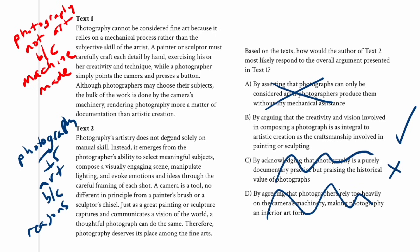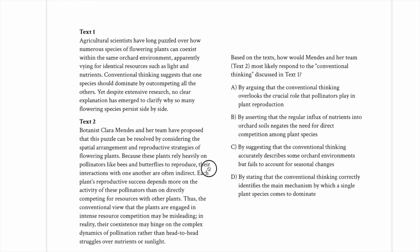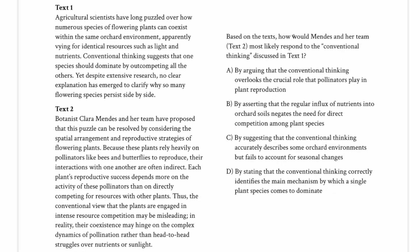In this case we really just have one answer choice that signals the overall disagreement between the two passages, so we can consider this a more basic example. In subsequent videos I'll have some more challenging ones, but here I just want to get the basic approach across.